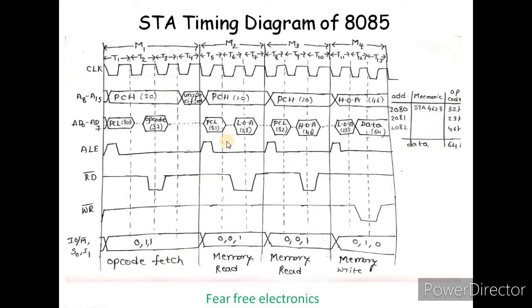Next is the second machine cycle M2 — memory read. For memory read, 3 clock pulses are required. The opcode has already been read. Now the program counter increments from 2080 to 2081. A8 to A15 carries the higher-order address and A0 to A7 carries the lower-order address 81H for address 2081.